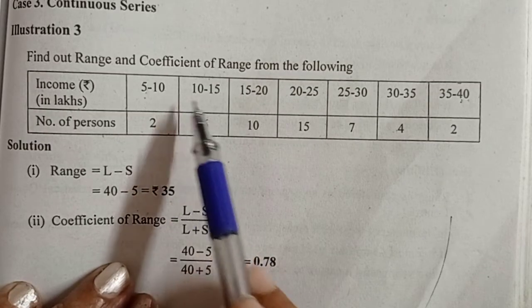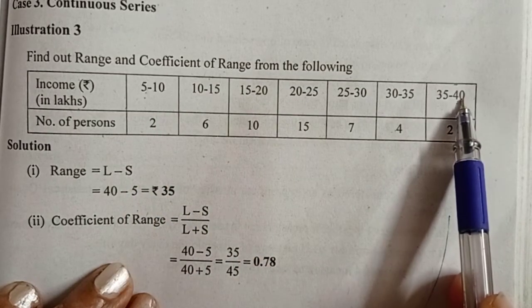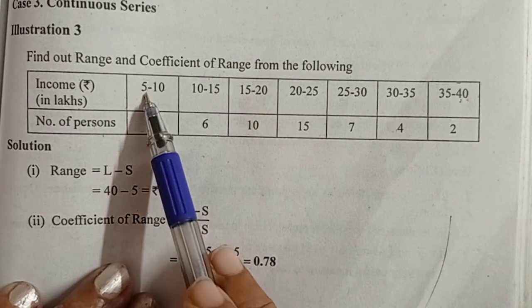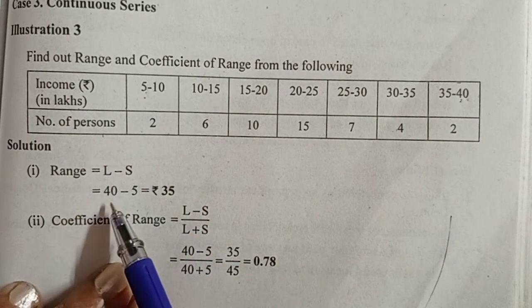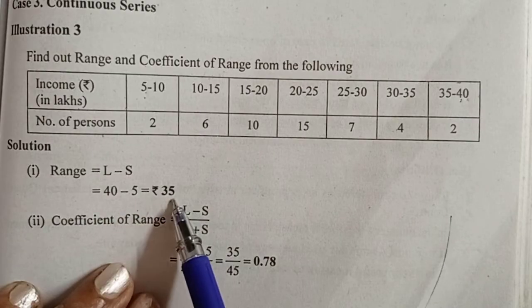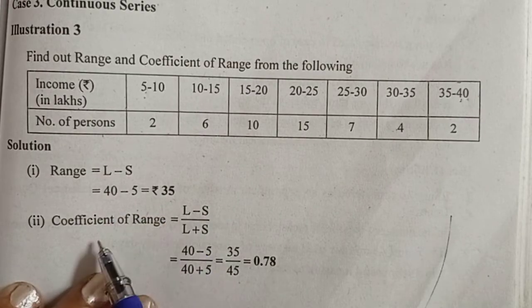Here, the highest value is 40 and the lowest value is 5. Therefore, range is equal to 40 minus 5, which is 35 rupees.